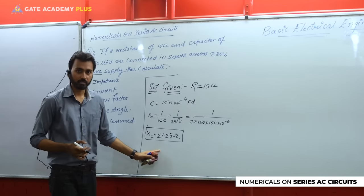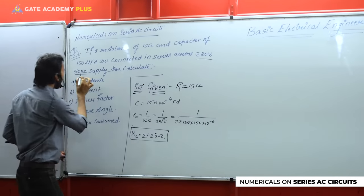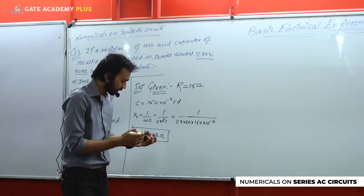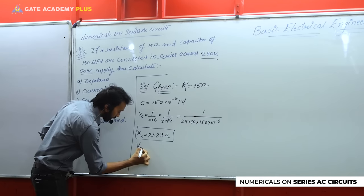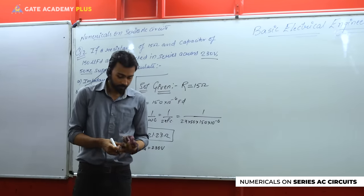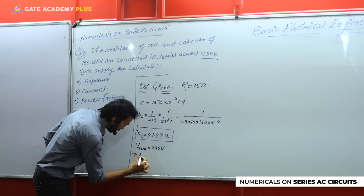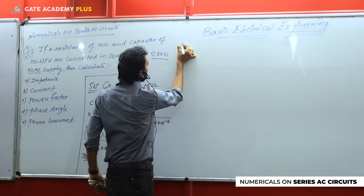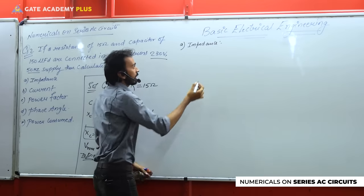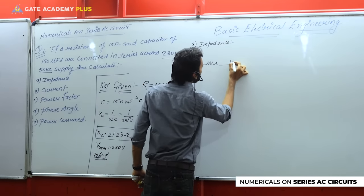Now R = 15 ohms and XC = 21.23 ohms are both available. The supply is described as connected across a 230 volt, 50 Hz AC supply — when given in this AC context, 230 volts indicates RMS form. So Vrms = 230 volts. Drawing the circuit diagram: supply 230V, 50Hz AC, with resistance 15 ohms and XC = 21.23 ohms in series. The current Irms flows but its value is unknown yet.